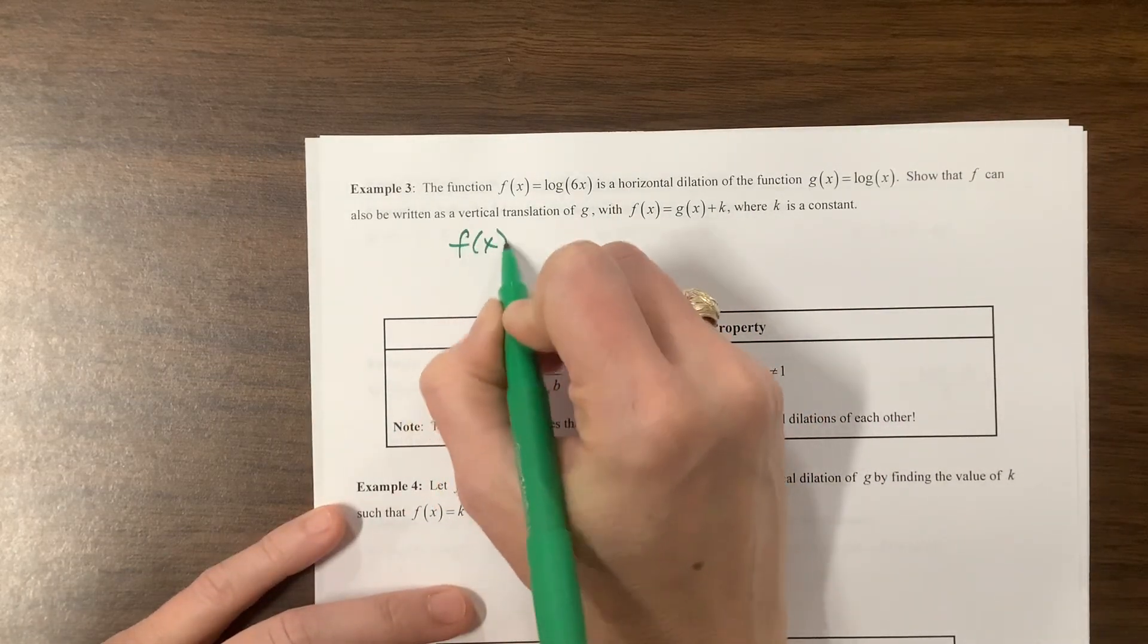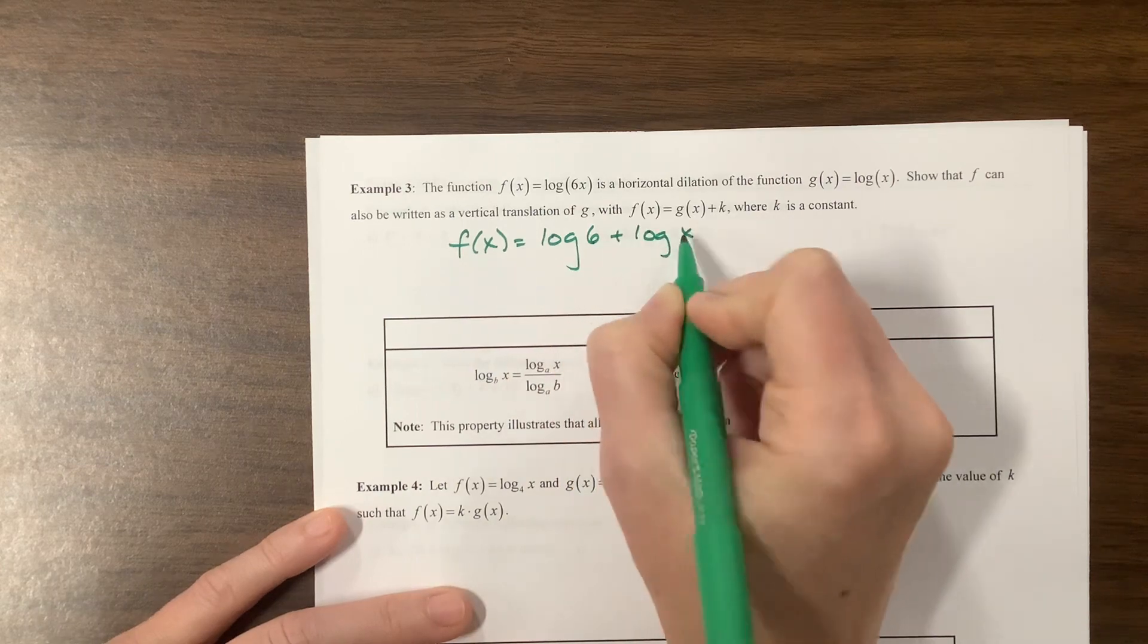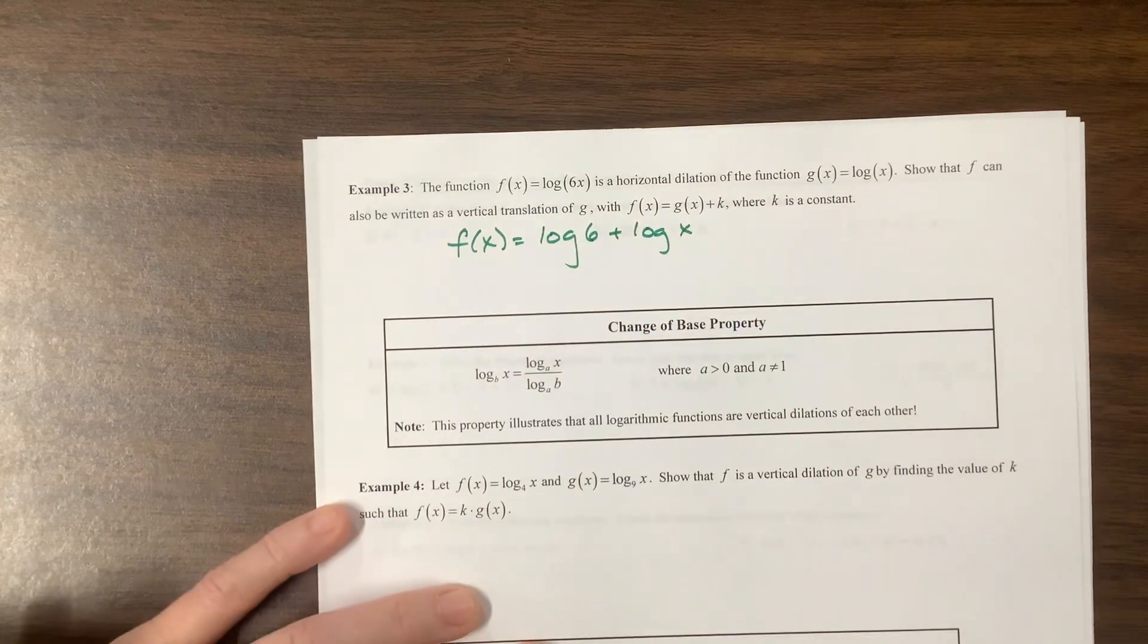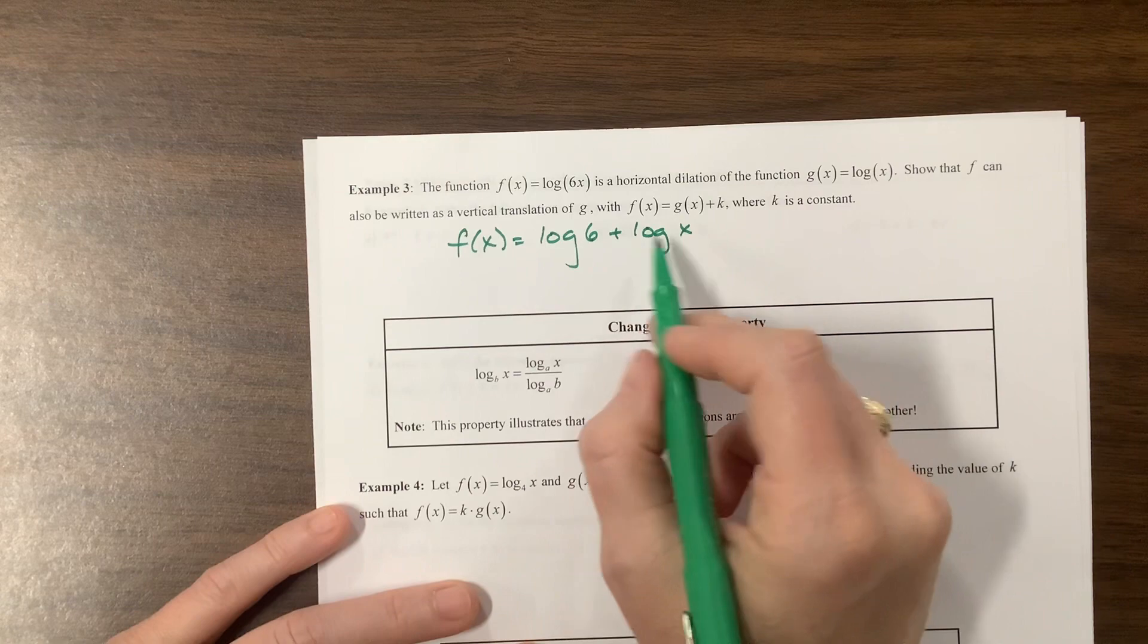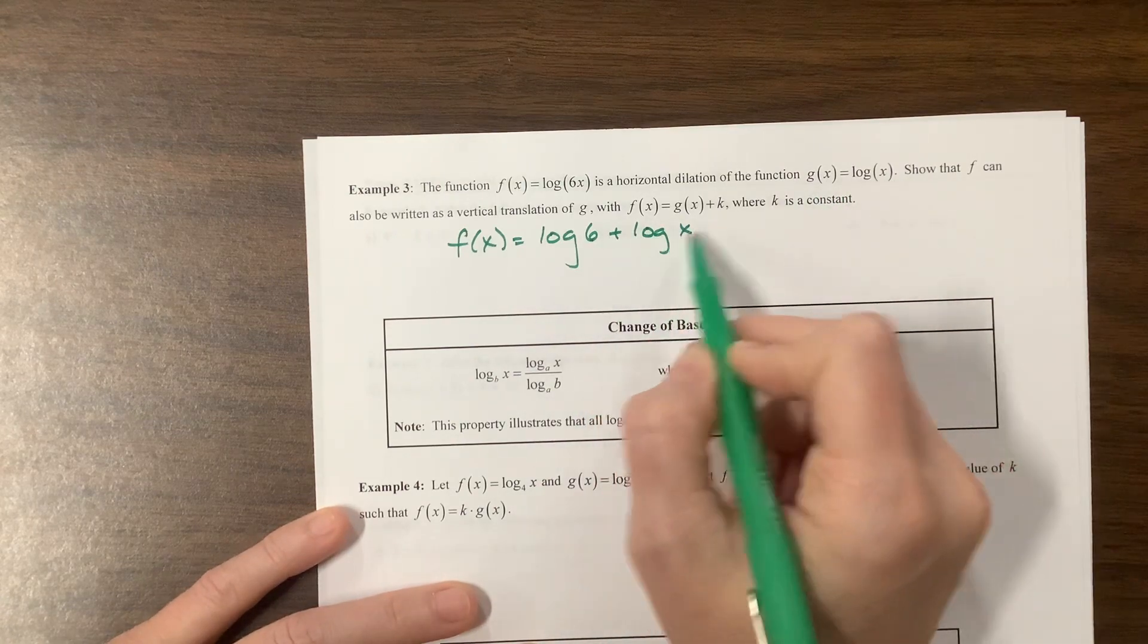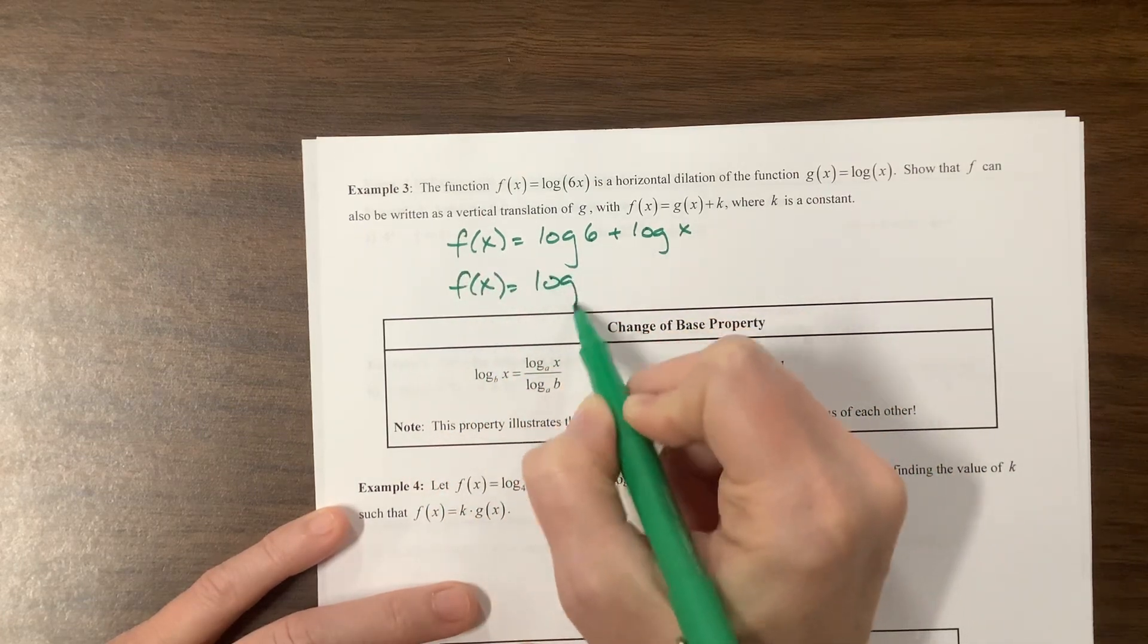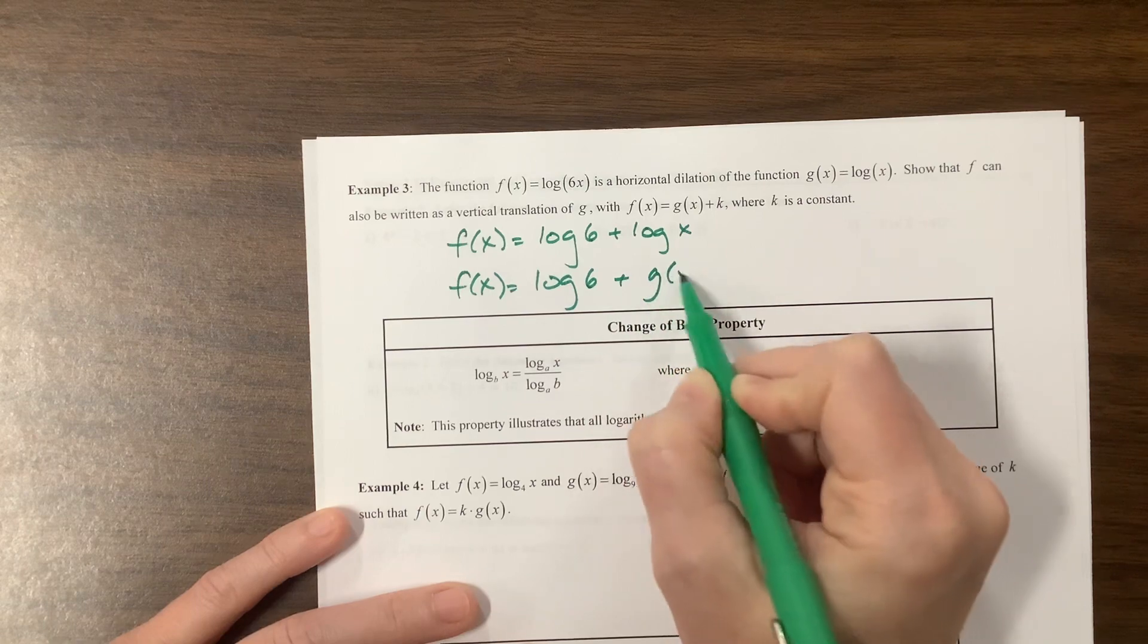If I take this, if I have f of x, I can rewrite this as log of 6 plus log of x because this multiplication can be split apart with addition. Well, this is saying, here is g is equal to log of x. So here's g. So f of x right here is equal to log of 6 plus g of x.